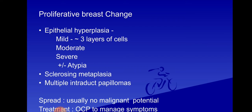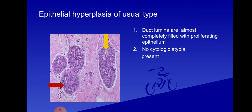Other features of proliferative breast changes include sclerosing adenosis and multiple intraductal papillomas. These usually have no malignant potential. Treatment is oral contraceptive pills (OCPs) to manage symptoms, since everything — pain, epithelial proliferation, cyst formation, excessive secretion, ductal dilatation, debris, and calcification — is due to hormonal changes in the breast.